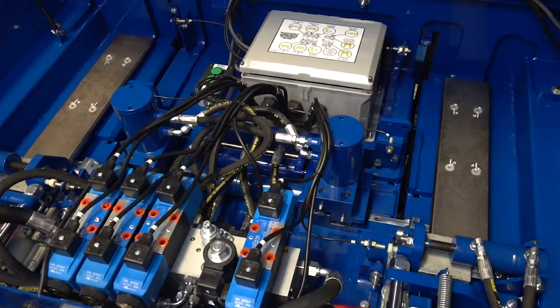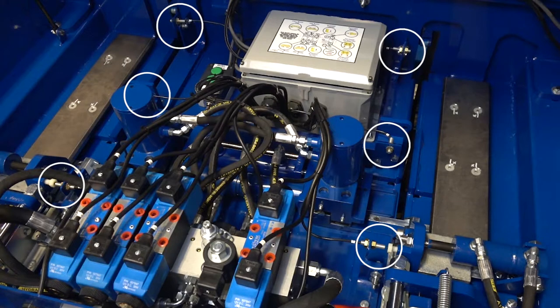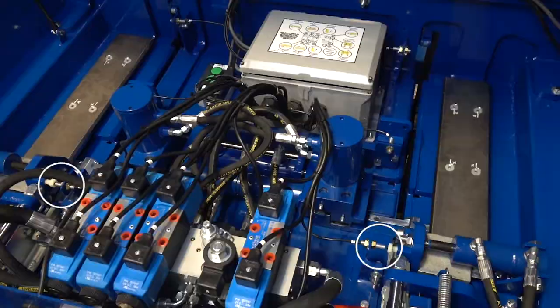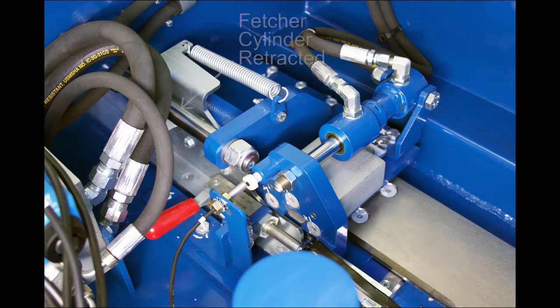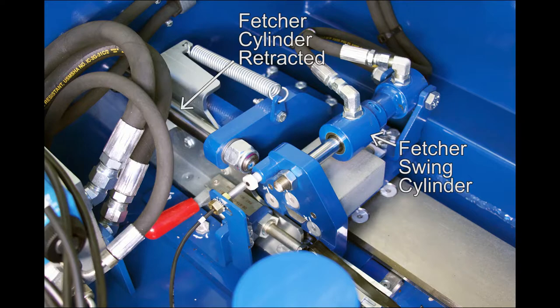The band box, where the strapping is crimped, contains six reed switches. First, there are two fetcher in reed switches which detect when the fetches are fully retracted and the fetcher swing cylinders are fully extended as shown here.